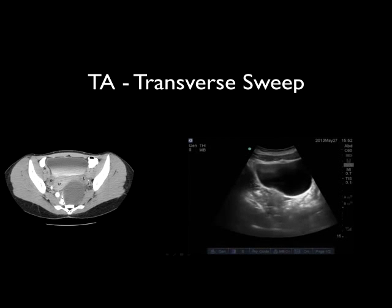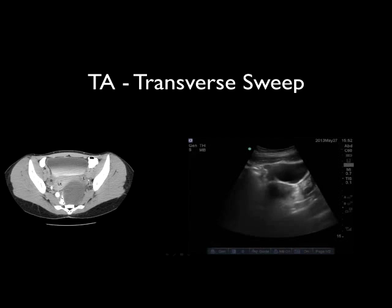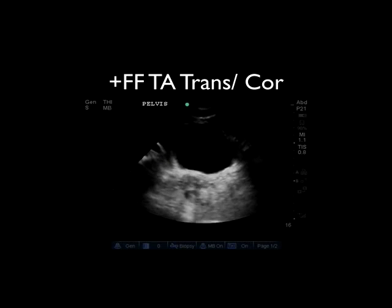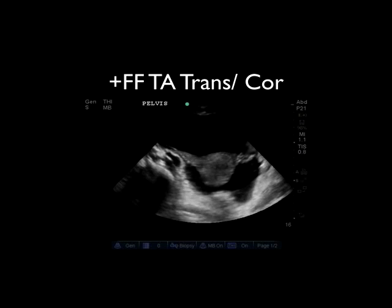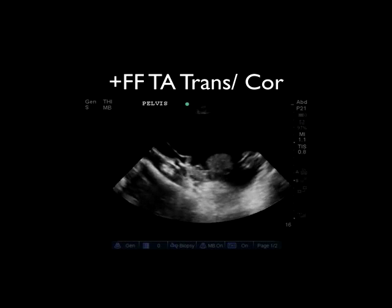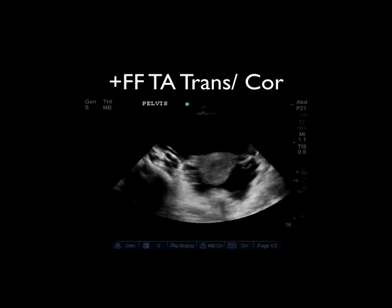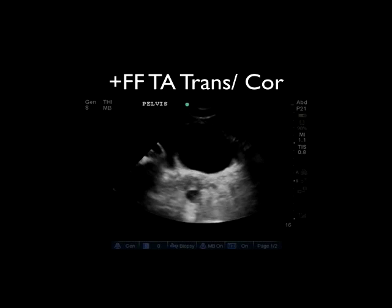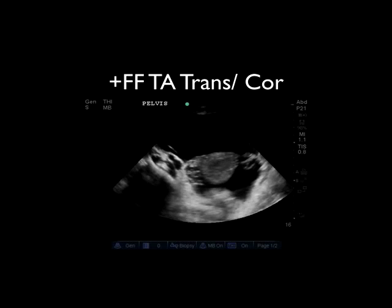This video clip starts with an image of the vaginal canal and then sweeps posterior to the uterus. Here's an appearance of the bladder, the uterus, and free fluid just posterior to the uterus. When looking at this image, try to identify which way is anterior, which way is the patient's right, and also try to describe how this is different from the normal images we've seen previously.